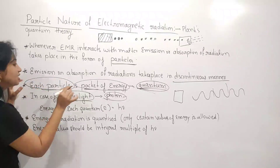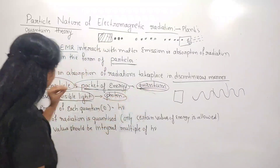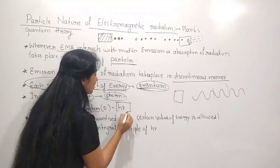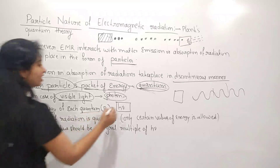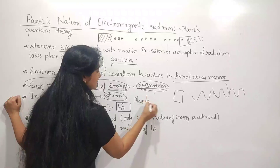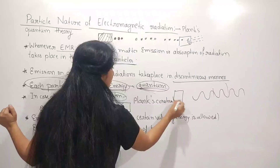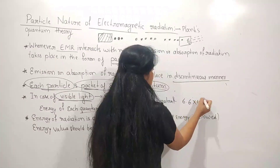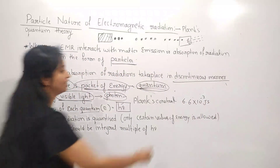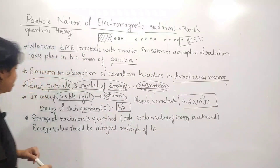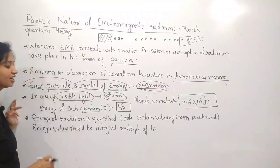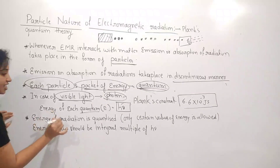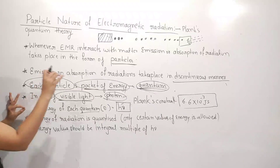How much energy does each particle or quantum have? The energy of each quantum is equal to hν. Here, h is Planck's constant, and its value is 6.6 × 10⁻³⁴ joule-seconds. ν (nu) is the frequency. So, E = hν. The energy of radiation is quantized.